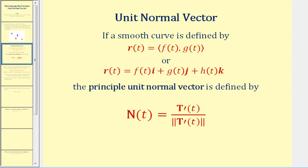Here's how we'll determine the unit normal vector. We'll have a smooth curve defined by a vector-valued function in R2 or R3. Then the principal unit normal vector is defined by N(t) = T′(t) divided by the magnitude of T′(t). Remember T(t) is the unit tangent vector valued function. So to find the unit normal vector, we first determine the unit tangent vector and then find its derivative, which can sometimes be challenging.